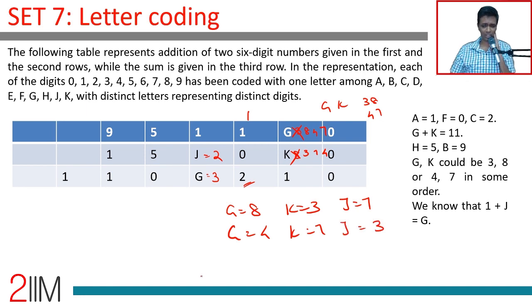Or G could be 7. In which case K would be 4. J would be 6. 6 is also not taken by anything.